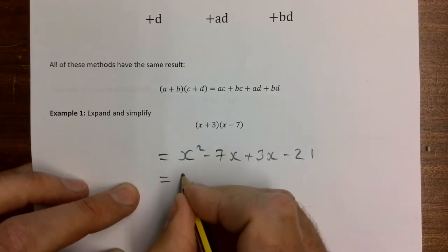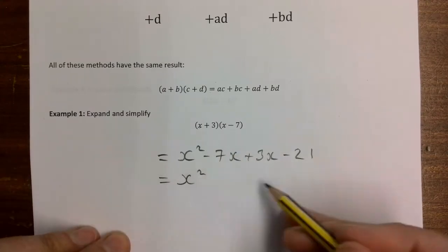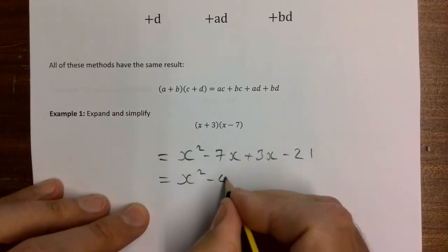Joining together our like terms: x squared minus 7 plus 3, so minus 7 plus 3 gives us minus 4x, and then minus 21.